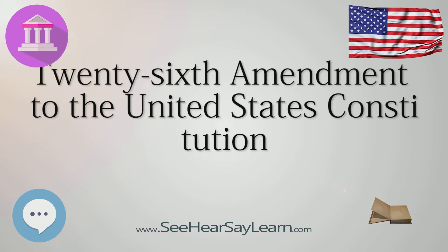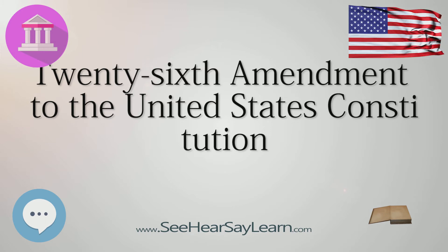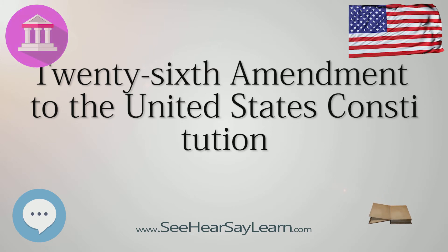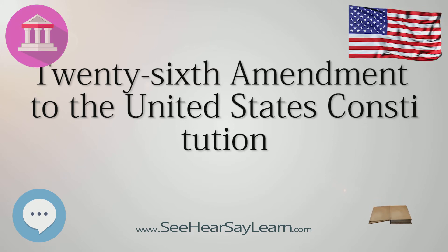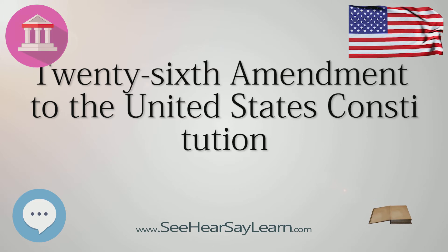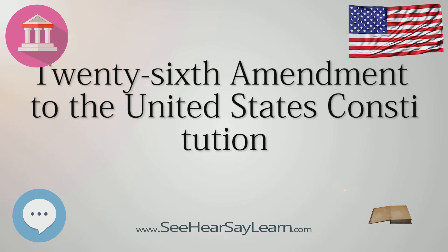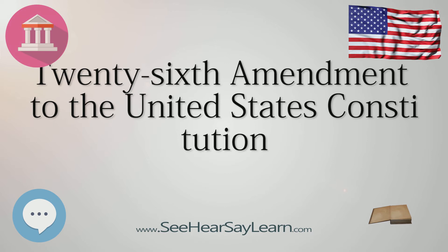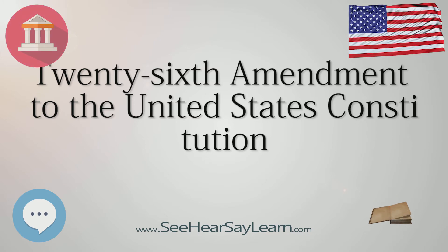Passage by Congress: On March 10, 1971, the Senate voted 94 to 0 in favor of proposing a constitutional amendment to guarantee that the minimum voting age could not be higher than 18. On March 23, 1971, the House of Representatives voted 401 to 19 in favor of the proposed amendment. Having been passed by the 92nd United States Congress, the proposed 26th Amendment was sent to the state legislatures for their consideration. Ratification was completed on July 1, 1971, after the amendment had been ratified by 38 states.